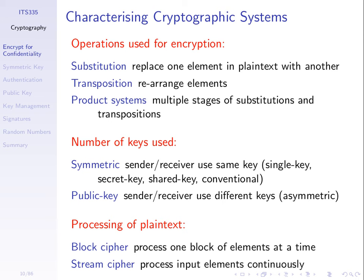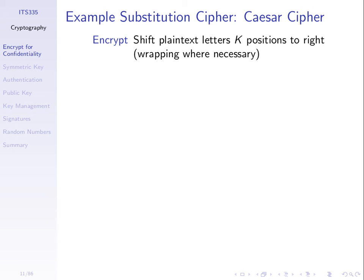Let's give an example of those two operations using very simple ciphers. Not secure, but easy to demonstrate. The first one is the Caesar cipher, which is maybe 2,000 years old. The general approach is that we take the English alphabet — plain text messages contain characters from A to Z — and to encrypt it, we take each character in the plain text message and shift it K positions to the right, where K is the key. That produces our cipher text.